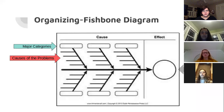So first we're going to examine the fishbone diagram. For a cause and effect essay, you want your major categories, followed by the causes of the problem for each major category, and all of this will lead to the major effect.